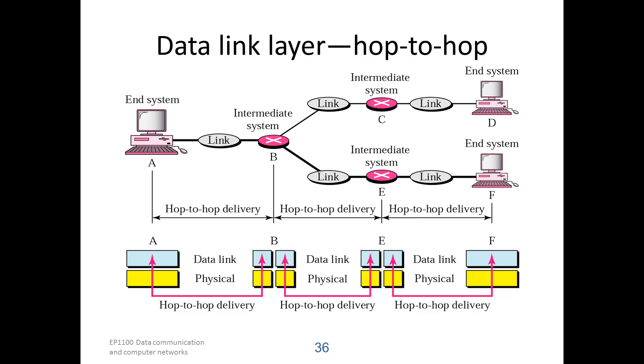The data link layer provides delivery of frames across a link, between neighboring nodes. The functions that it adds to the physical layer is flow control, to make sure that the sender does not send more frames than what the receiver can handle, error control, to handle frames that are received in error,